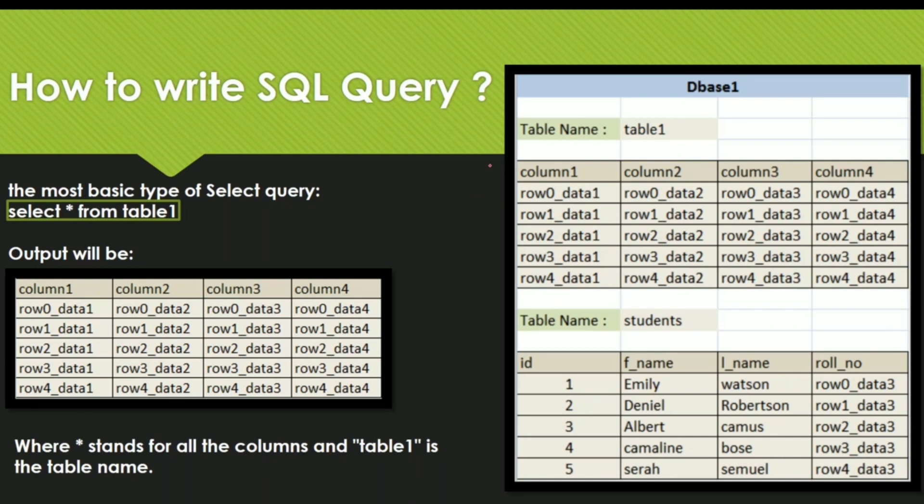So if you look over here, there is this table 1 which has following columns and some data in it. So if I want to fetch everything from this table, my command will be select star from table 1 where star stands for all the columns and table 1 is the table name.